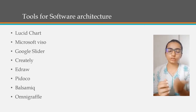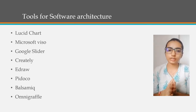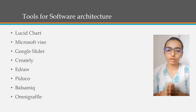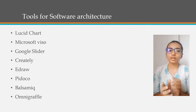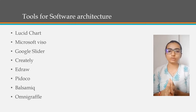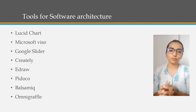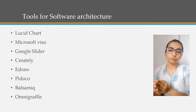Now we learn the tools used for software architectures for different modules. For example, Lucy Charts are mainly used for flow diagrams and chart diagrams. Microsoft Visio also helps for architecting. Google Slides, Creately Software, Hydro, Pidoco, and Omni-Graphels are also available. These software are used for architecting different types of modules.